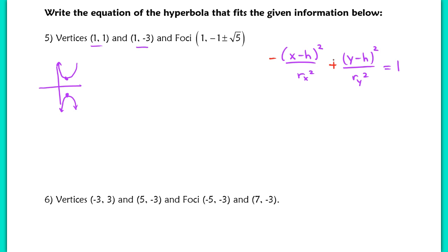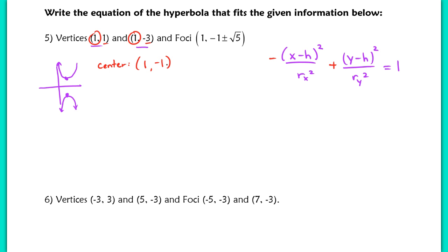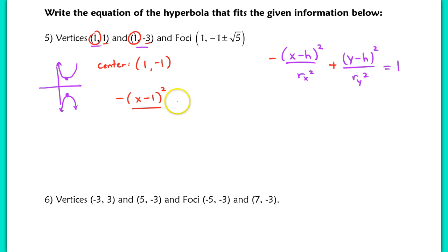Now let's find the center by finding the midpoint between the vertices. The x-coordinate stays the same, so we know it's 1. Averaging the y values: negative 2 divided by 2 gives negative 1. So the general equation changes to a particular one: negative of x minus 1 squared over r sub x squared, plus y minus negative 1 — which becomes y plus 1 — squared over r sub y squared, equaling 1.